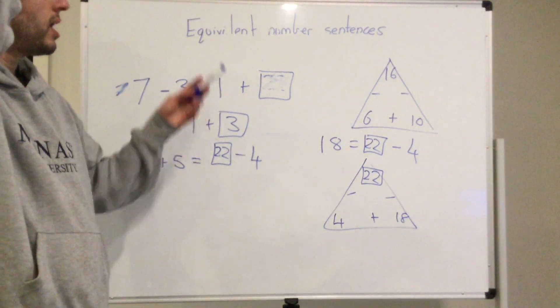So the answer must be 22. Sorry, I put that in the wrong area. 22. I hope that helps you understand equivalent number sentences. If you need any extra help, message me and I'll make a video for you.